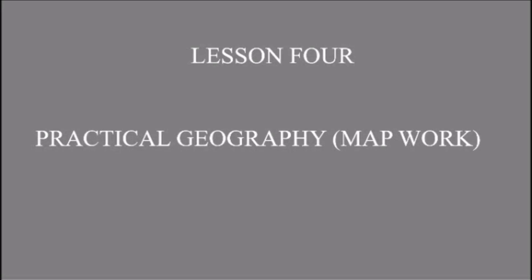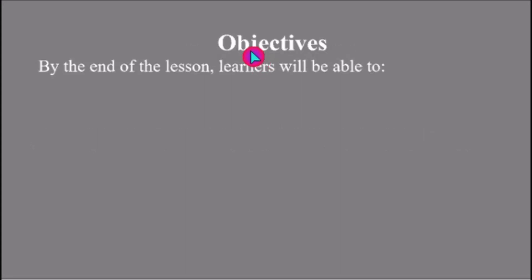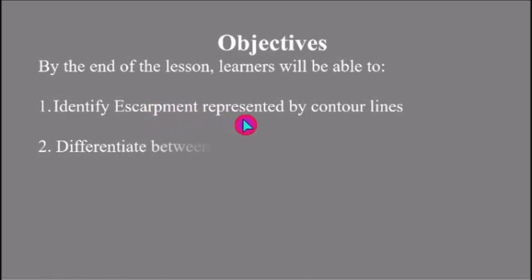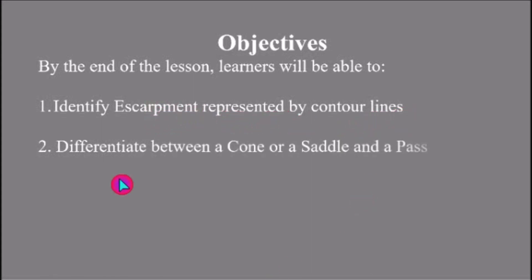Hello. Welcome to Lesson 4 of Practical Geography or Mapwork. Objectives of the lesson: by the end of the lesson, learners will be able to: 1. Identify escarpment represented by contour lines, and 2. Differentiate between a col or a saddle and a path.